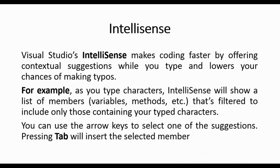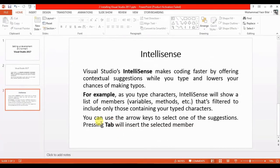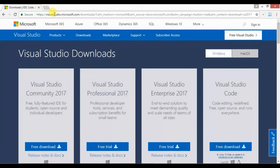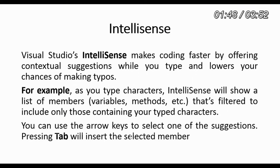Visual Studio IntelliSense makes coding faster by offering contextual suggestions while you type, and lowers your chances of making typos. As you type characters, IntelliSense will show a list of numbers, variables, methods, etc., filtered to include only those containing your typed characters. You can use the arrow keys to select one of the suggestions, and pressing Tab will insert the selected member. IntelliSense is a very cool feature that helps you develop code cleaner and faster.